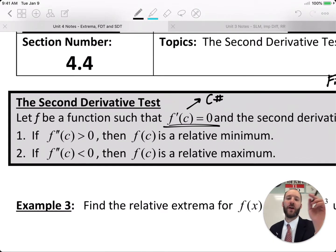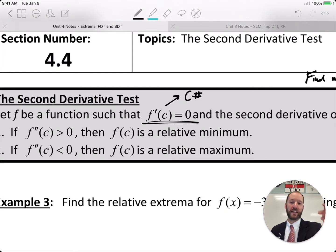If f double prime at c is greater than 0, then f of c is a relative minimum because if you have a positive second derivative, you have concave up behavior. If you have the first derivative equaling 0 as a critical number, that critical number corresponding with concave up behavior results in a minimum.